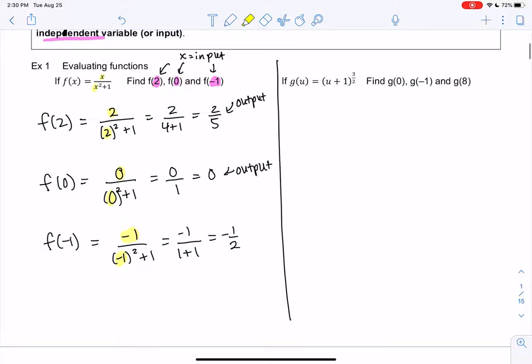Let's input 0 for u, negative 1, and 8. So g of 0 means we get 0 plus 1 in parentheses to the 3 halves. So we get 1 to the 3 halves. And then even if you don't remember a 3 halves power, 1 to any power is 1. So my output is 1. I'm going to box them all. It looks nicer.